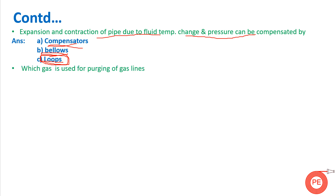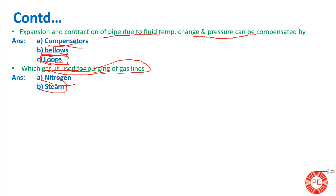Which gas is used for purging of gas lines? During commissioning, purging of the complete system is required. Purging is always done with either nitrogen or steam, because of their inert nature. Steam will convert back to water and can be drained out. Nitrogen, being an inert gas, is also commonly used for purging.